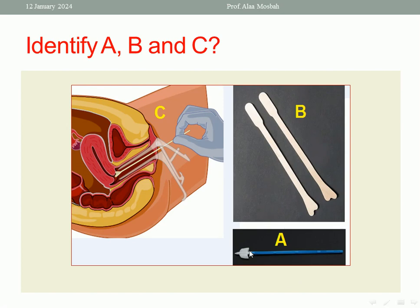A is Cytobrush, B is IRS spatula. C is the procedure of cervical smear. Screening program, we use Cytobrush and IRS spatula to do cervical smear.